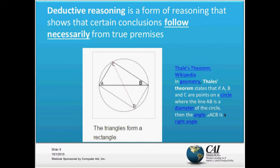The example of Thales' theorem in geometry is that if you have three points A, B, and C, and points A and B are on the diameter of a circle, then the angle ACB is going to be a right angle. There are interesting ways of demonstrating that. Using the illustration here, if you extend the triangles or create a symmetry of them, they form a rectangle — and the angles of each corner of a rectangle have to be a right angle. So that's a form of deduction very common in mathematics.